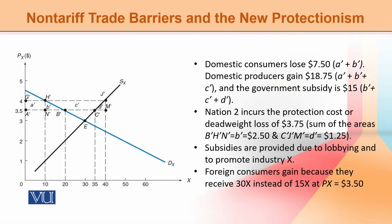We have domestic demand and supply forces. We assume that the international price is $3.5, and then the state provides a subsidy of $0.5. Ultimately the international price becomes $4. Supply is at J-bar, that is 40 units, demand is 10 units, and exports are 30 units.